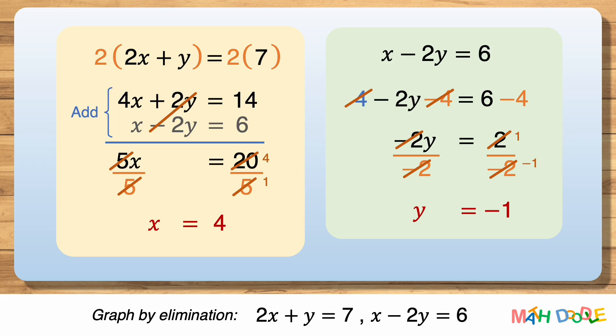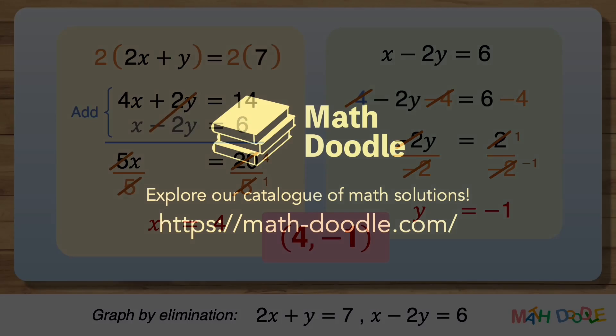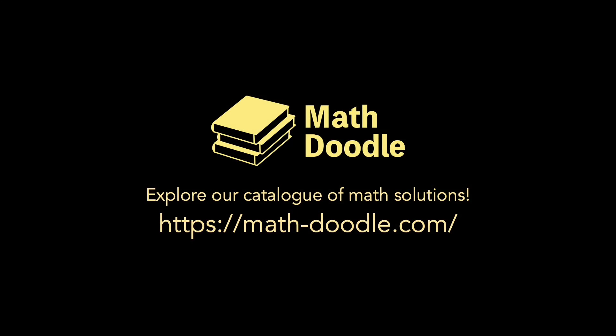So, the values of x and y that satisfy both equations are 4 and minus 1.